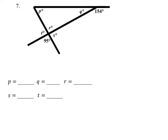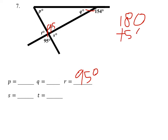This angle right here is vertical, so R would also be 95 degrees. And these two together should equal 180 degrees. So 180 minus 154 equals 26. Q is 26 degrees.